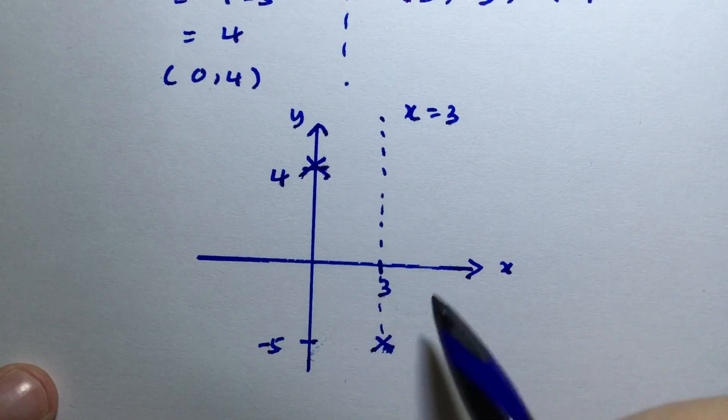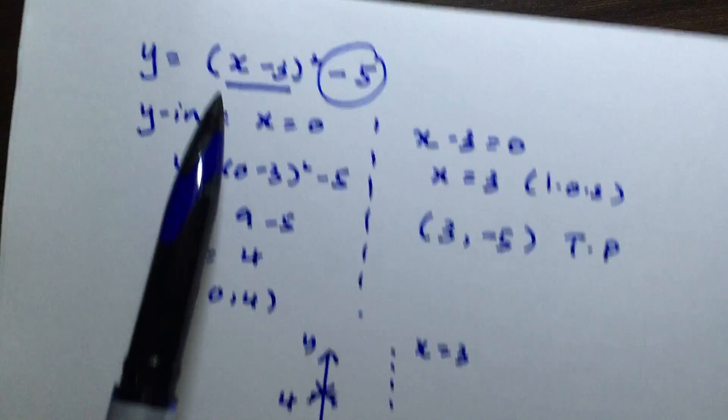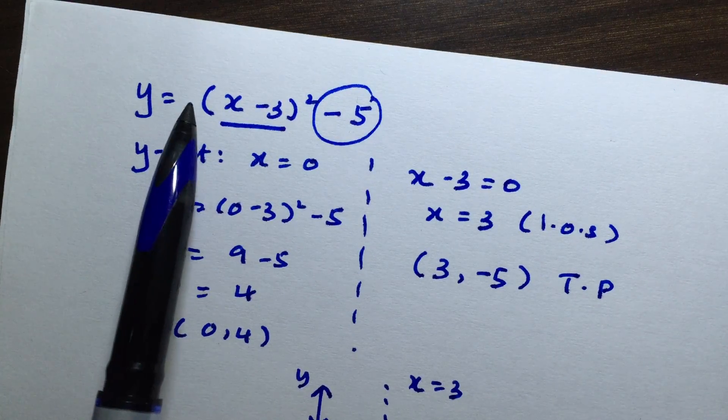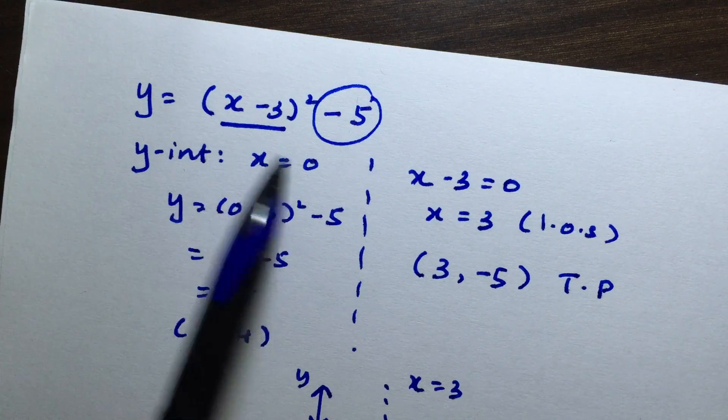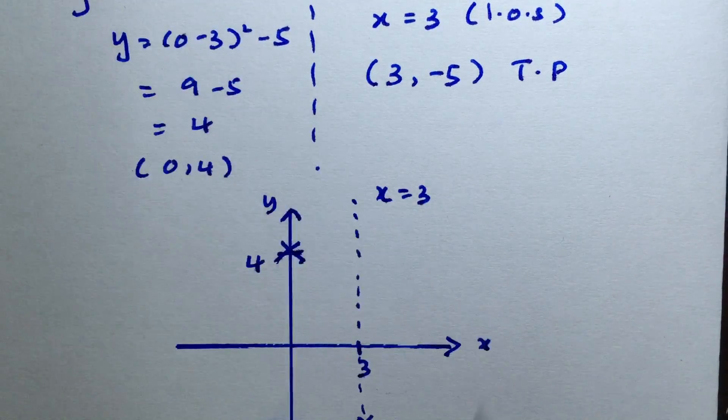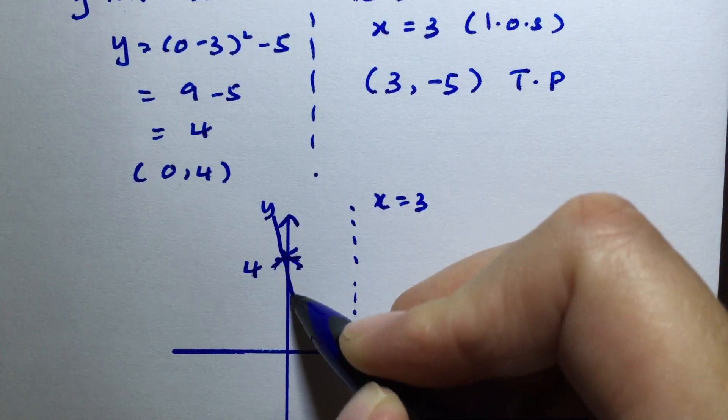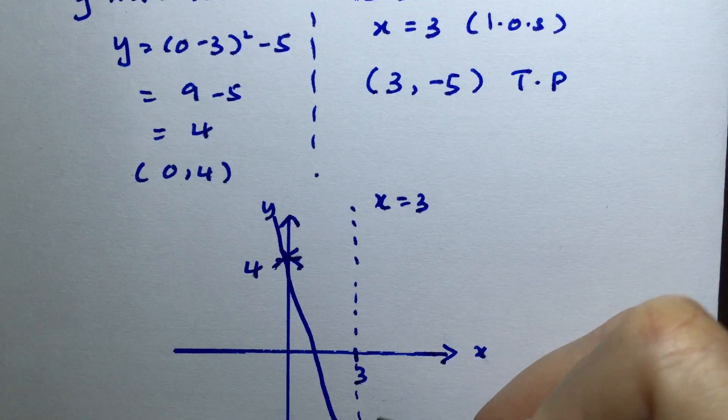This is a minimum graph because there's no negative sign outside, meaning the coefficient is positive. So we draw the curve through these points, going down and back up.